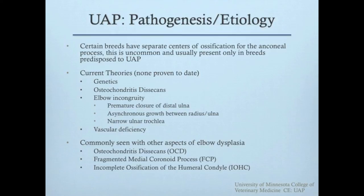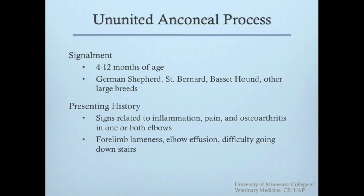It is important to note that a UAP can be seen concurrently with other developmental diseases of the elbow. Since a UAP is more easily diagnosed radiographically, these other elbow diseases are sometimes overlooked. Dogs are typically between 4 and 12 months of age when they present with a UAP. Clinical signs are associated with elbow inflammation and pain, and dogs can be bilaterally affected.